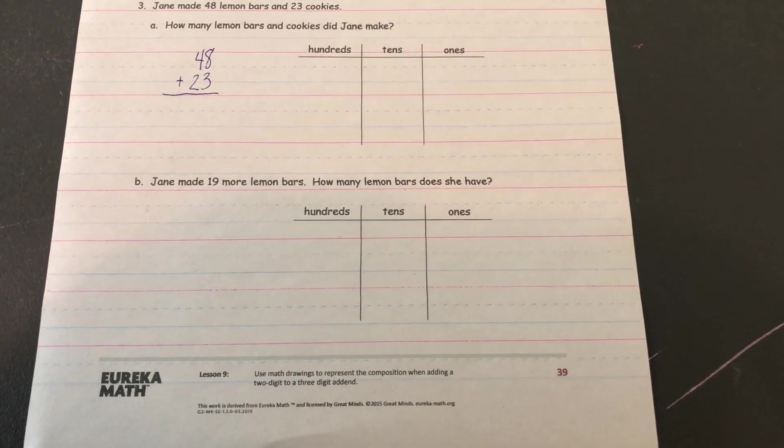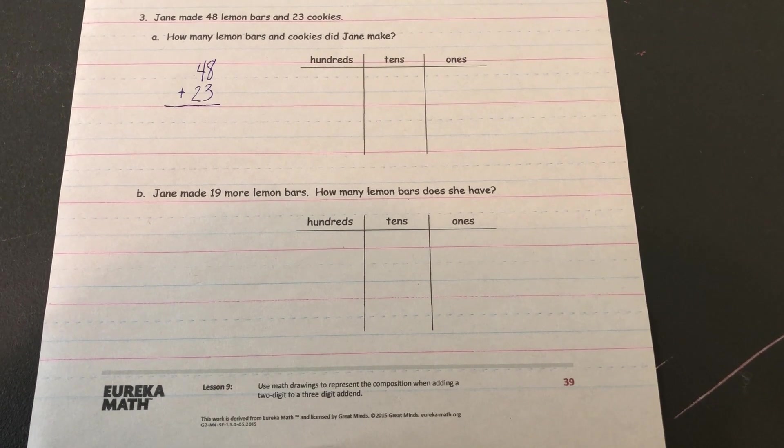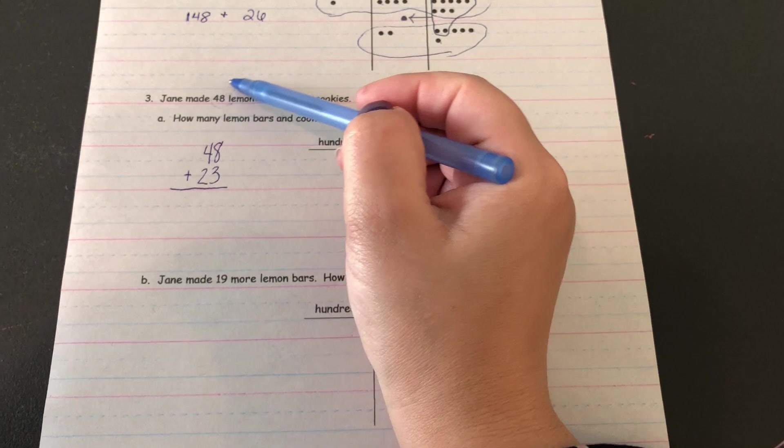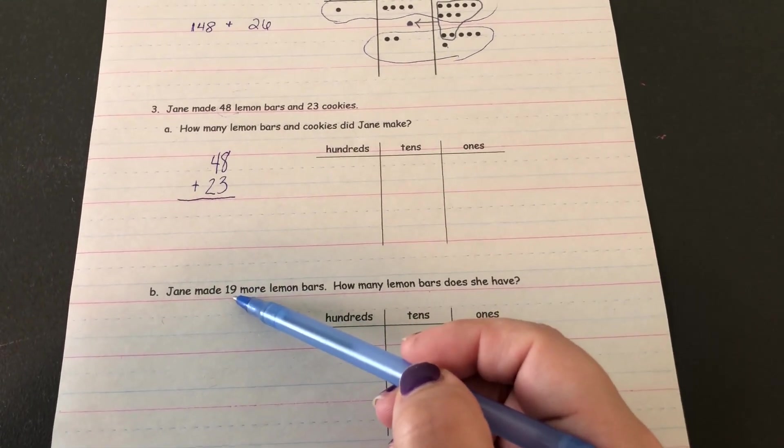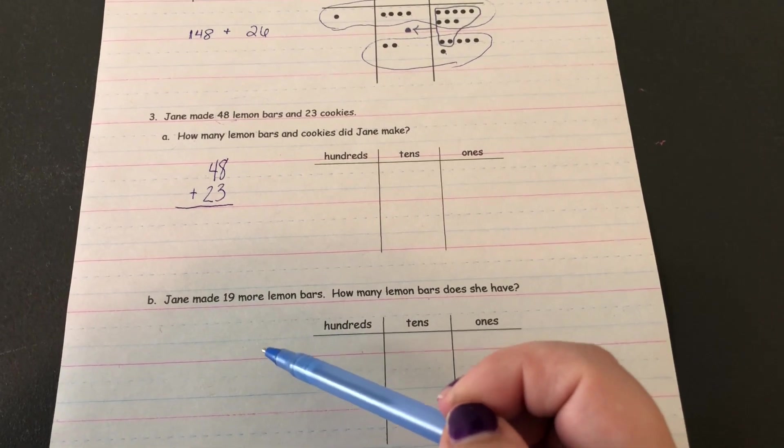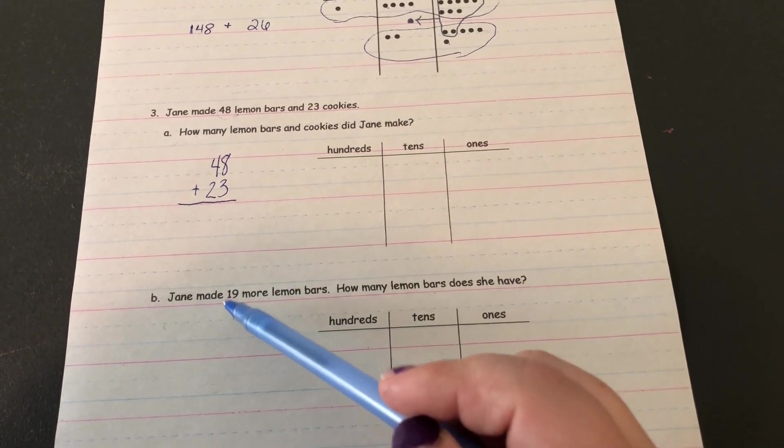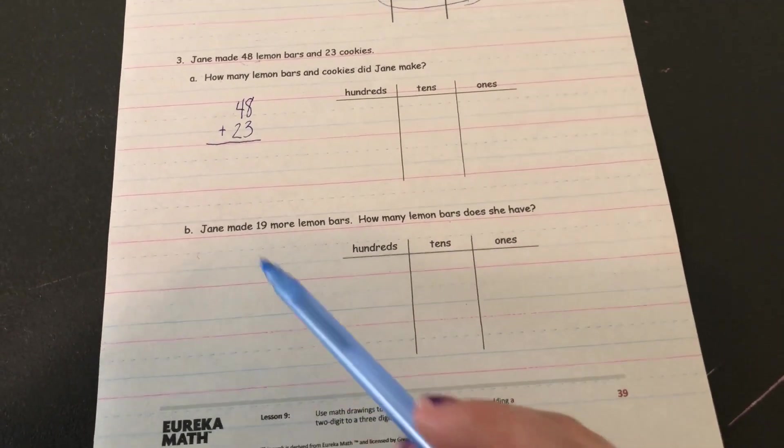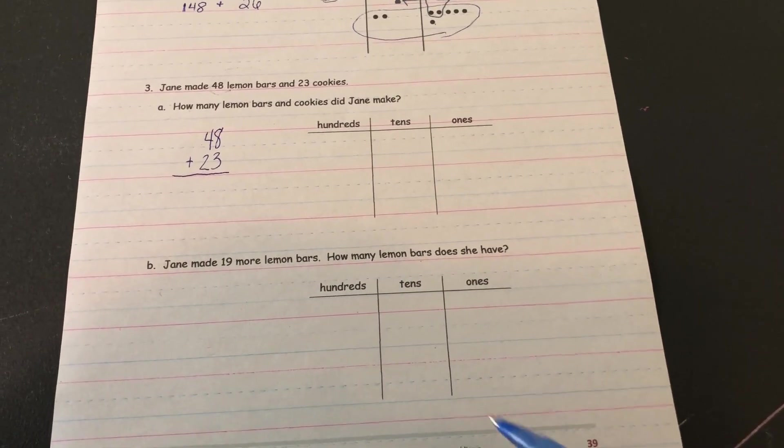And B says Jane made 19 more lemon bars. How many lemon bars does she have now? Well, I know that she had 48 and she just made 19 more. So to answer this one, you'll have to figure out, well, if she had 48 and now has 19 more, how many does she have now? Show it in vertical form or standard algorithm and then double check it with your place value chart.